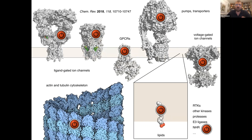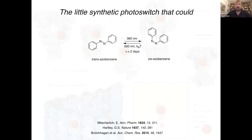This has mushroomed into a very broad effort, going through all these different proteins which we have endowed with a photoswitch. We have become quite adept at doing this, and we call this — as Burkhard mentioned — photopharmacology. Here is the little photoswitch that could. This is a molecule very familiar to organic chemists — everybody who went through introductory organic chemistry probably had to work with this at some point. It's an azobenzene molecule. It's artificial; it does not really occur in nature.